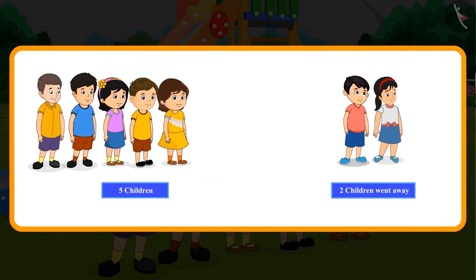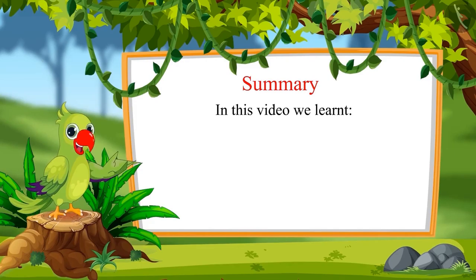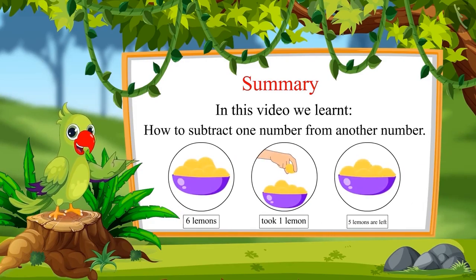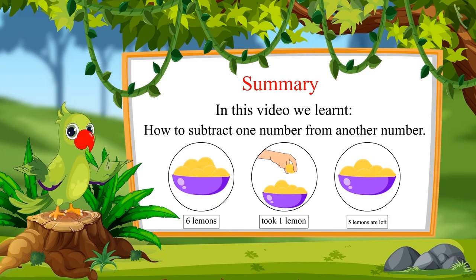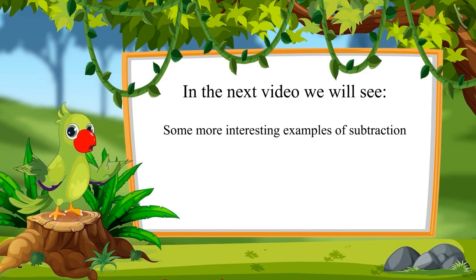Out of seven children, two children went away, so there are five children left. You had the same answer, right? Very good! That is all for today. In this video we learned how to subtract one number from another number. In the next video we will see some more interesting examples. Till then, bye friends!